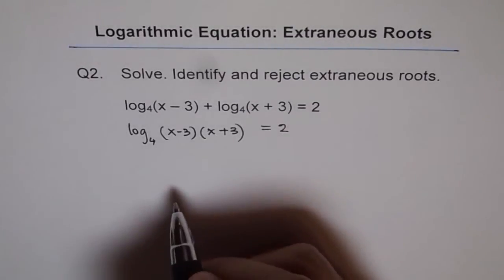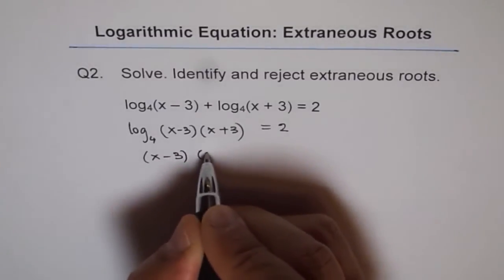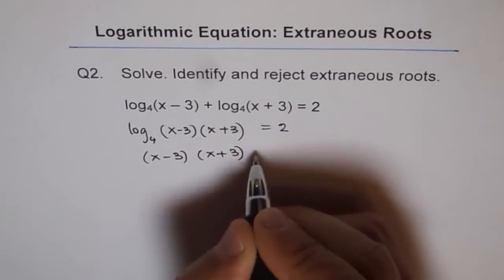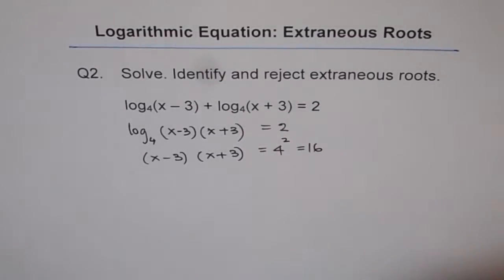Now this can be written in exponential form: (x - 3)(x + 3) = 4² = 16.